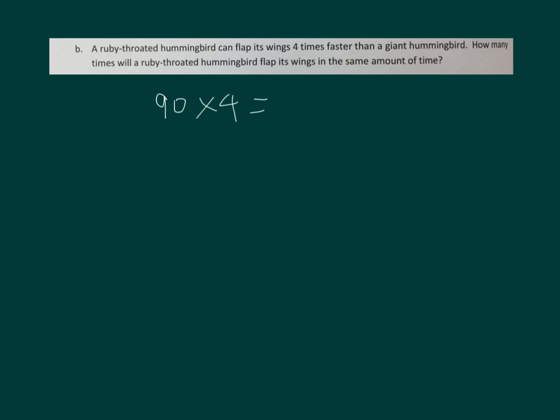Take 90 times 4. 90 was the amount for the giant hummingbird. Times 4, we get 360. So a ruby-throated hummingbird can flap its wings 360 times in 7.2 seconds. Make sure to write that out. Write out a complete sentence for it.